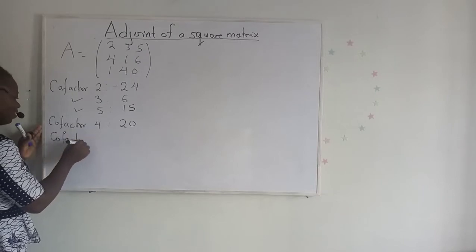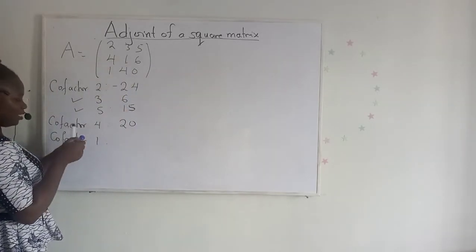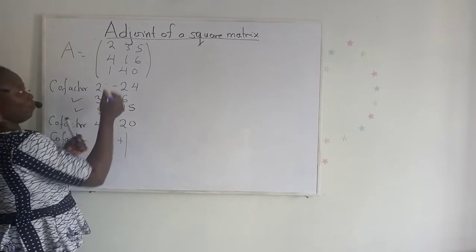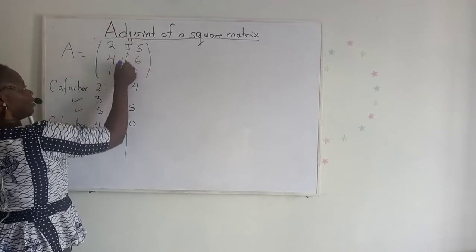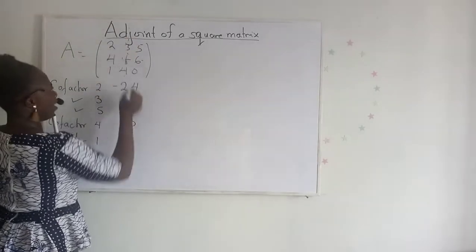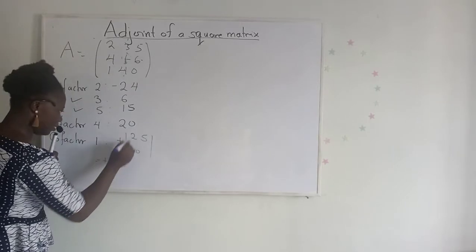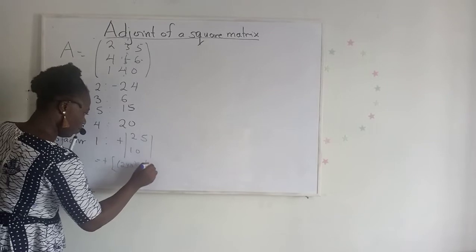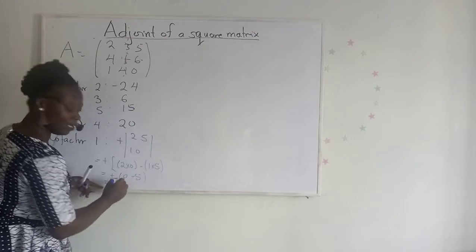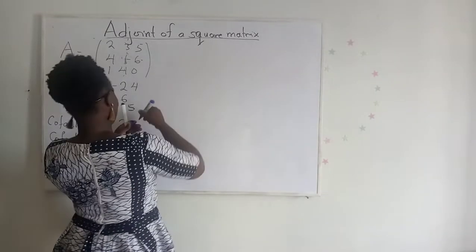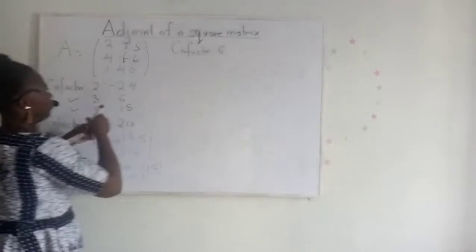Now I want to find the cofactor of element 1 (row 2, col 2). The place sign here is positive. We find the determinant of the remaining matrix after crossing out the column and the row. So I have: 2, 5 / 1, 0. The determinant is 2 times 0 minus 1 times 5, which is 0 minus 5, giving me negative 5.